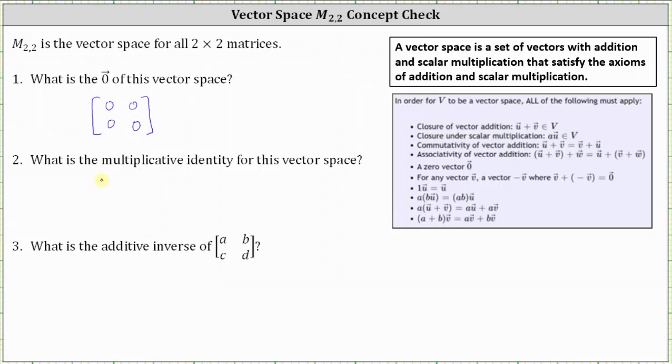This will be the two by two identity matrix where we have a main diagonal of ones and the remaining entries are zero. So this is the two by two identity matrix. This two by two identity matrix times any matrix A in M22 equals matrix A.